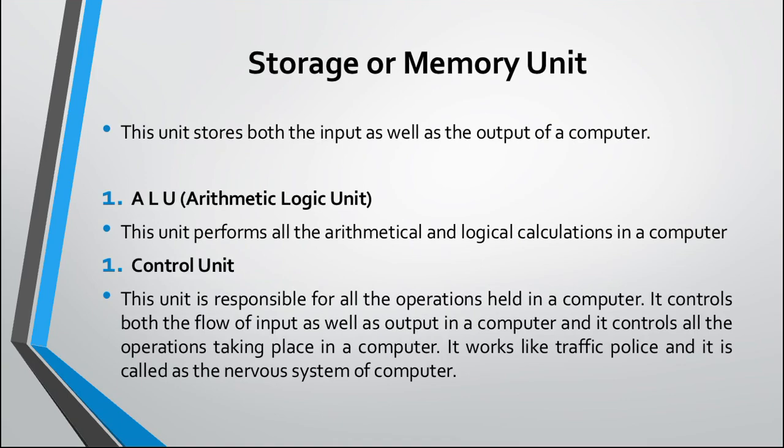The control unit is responsible for all the operations held in a computer. It controls both the flow of input as well as the output in a computer and controls all the operations taking place. It works like a traffic police and is called the nervous system of a computer. The ALU and the control unit together form the brain of a computer, and the control unit controls all overall operations.